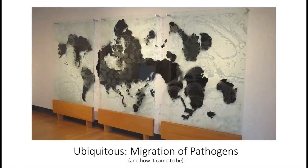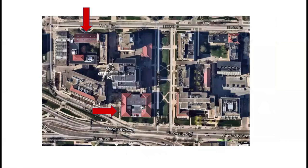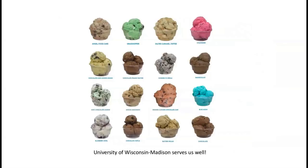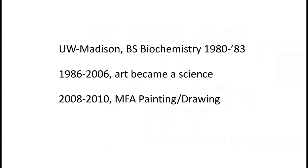Thank you very much for the introductions. I'm thrilled to be here — it's a tremendous honor to have this body of work on permanent display at the Biotech and Genetics building on campus where I used to be a student. Here is a schematic overview of some buildings important to me when I was a student here between 1980 and 1983. The lower arrow points to the Biochemistry Building, where I met my husband Byron — he was a graduate student in biochemistry, I was an undergrad. The top arrow points to Babcock Hall, where they make ice cream, and I'm pretty sure everybody in the audience has their favorite.